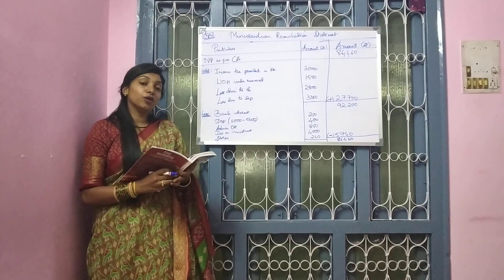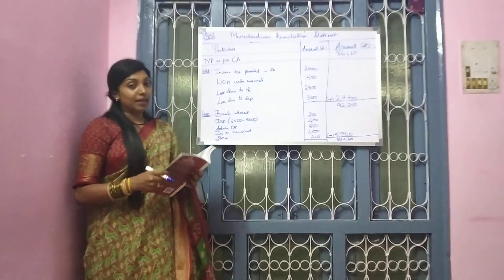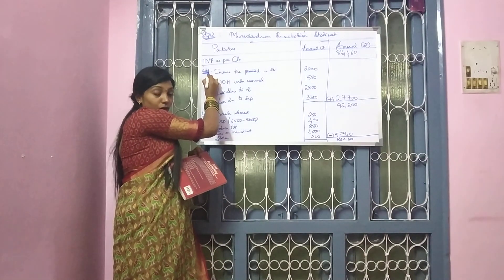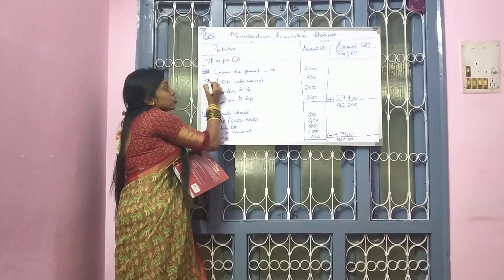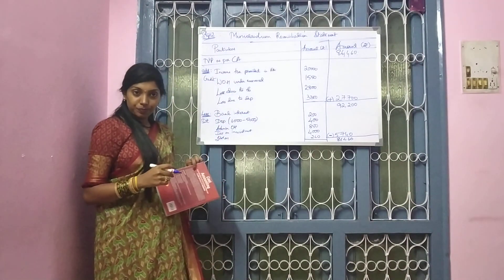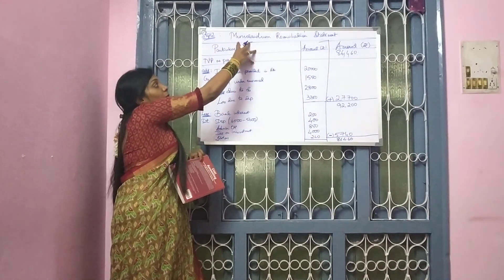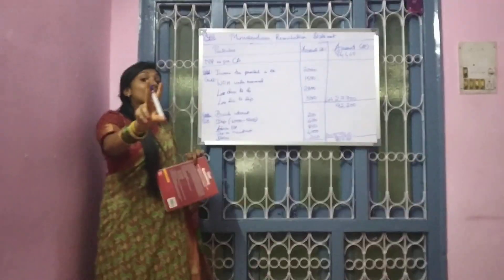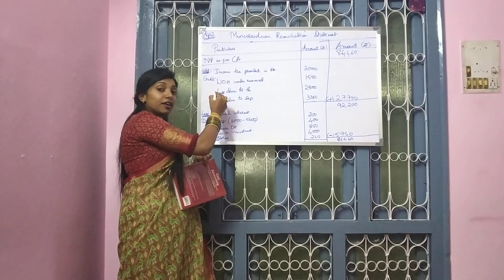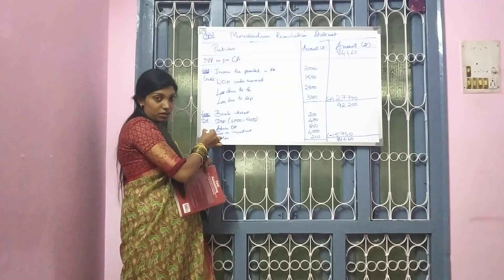So what will be your third step? Your third step will be memorandum reconciliation account. When you are adding, as per your ledger account, all the add transactions will be credited. All the less transactions will be debited. Whatever income or add items you have written in your memorandum reconciliation statement — in your second step, whatever you have added, you are writing it under the credit side. Whatever you have lessened, that will be written on the debit side.